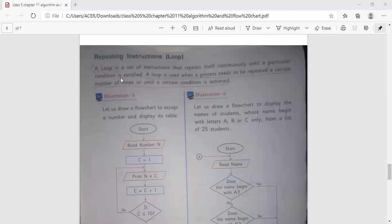Repeating the instructions loop. Now what is a loop? A loop is a set of instructions that repeats itself continuously until a particular condition is satisfied. A loop is used when a process needs to be repeated a certain number of times or until a certain condition is achieved. Loop is a process which is repeated again and again a number of times.